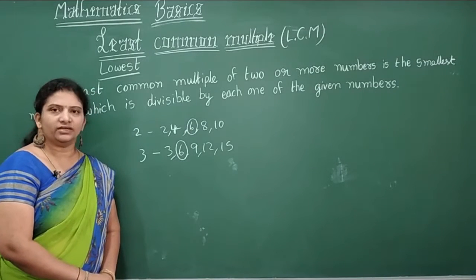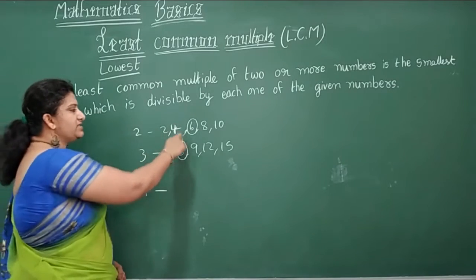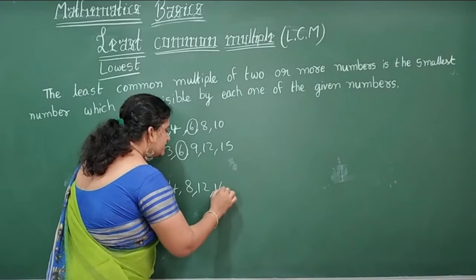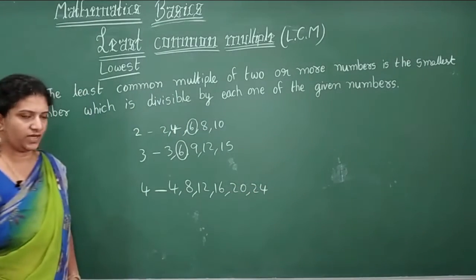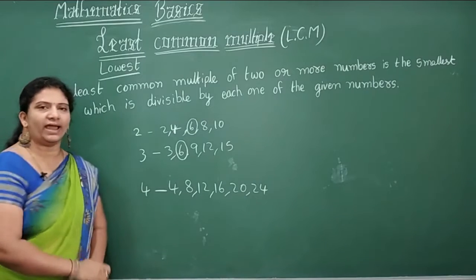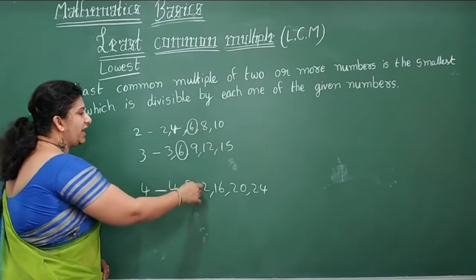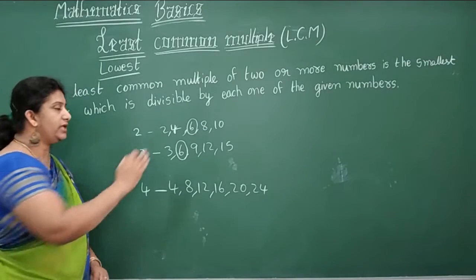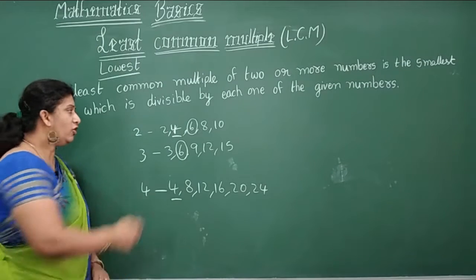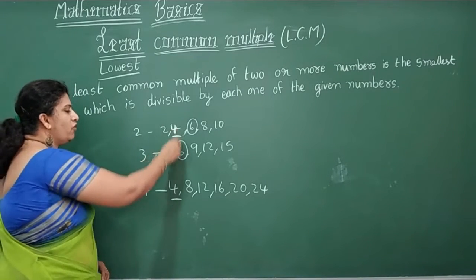Now let's take 2 and 4. Multiples of 4 are: 4, 8, 12, 16, 20, 24, and so on. What is the least common multiple of 2 and 4? You might say 8 or 12, but I am asking for the least. In the 2 table you have 4, and 4 is also a multiple of 4 itself. 2 is not a multiple of 4, so 4 is the LCM of 2 and 4.